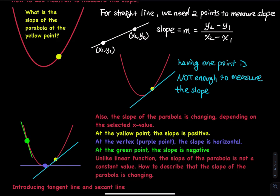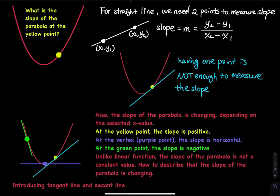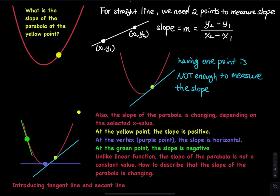The problem is that having one point is not enough to use the slope formula. Also look at this parabola: we start going down, and then when we reach the vertex we have a slope equal to zero, and then we go up. So the slope goes from negative to zero and then positive. The slope is changing — from negative to zero and then positive. The slope of this parabola is changing depending on the selected x value.